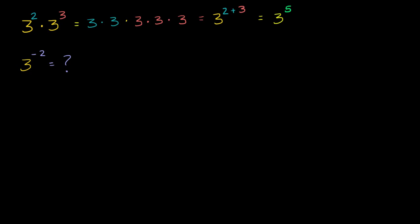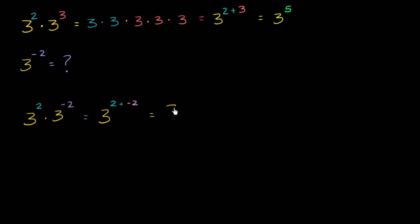Let's try a little experiment. What should three squared times three to the negative two power be equal to? Well, if we want to keep this property going, this should be equal to three to the two plus negative two power, which of course would be equal to three to the zeroth power. And any non-zero number to the zeroth power is going to be equal to one. So this should be equal to one.